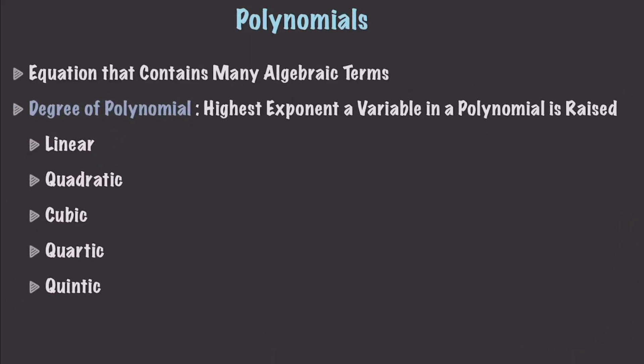A polynomial is just an equation that contains many algebraic terms. You've seen them before. So if you have x squared plus 10, that is a polynomial. And more specifically, it is a quadratic binomial, as you're going to see.